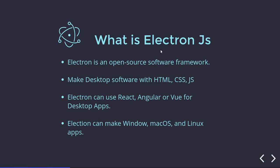So the first question is: what is ElectronJS? It is basically an open source software framework. You might be wondering if we can make software with JavaScript — yes, with the help of ElectronJS you can create software in JavaScript. We will make desktop software with HTML, CSS and JS. If you know the basics of HTML, CSS and JS, then you can easily create ElectronJS applications and generate desktop software.